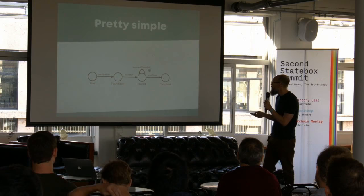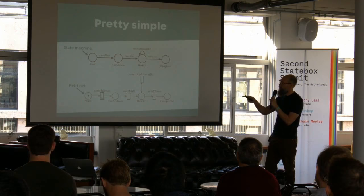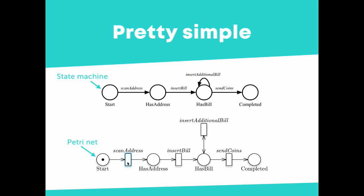Another way to look at this is with a Petri Net. In this case you'll see they look very similar — in fact, they're equivalent. For this simple case you're doing the exact same thing. You've got these little bars or boxes with the arrows instead of just the arrows. The token moves through, following the arrows: put some cash in, send some coins, and we're done.